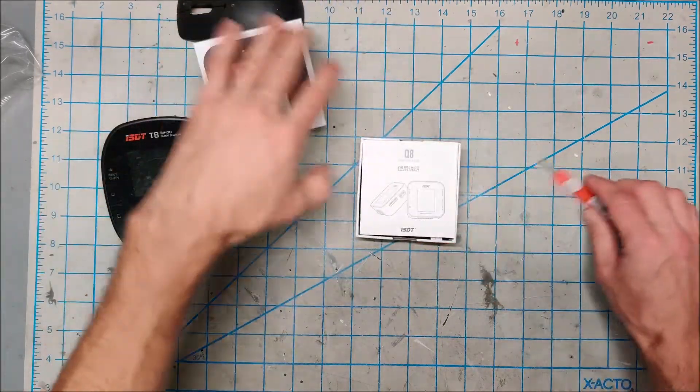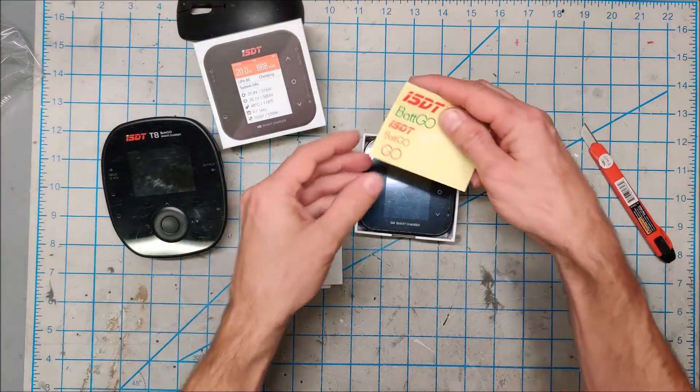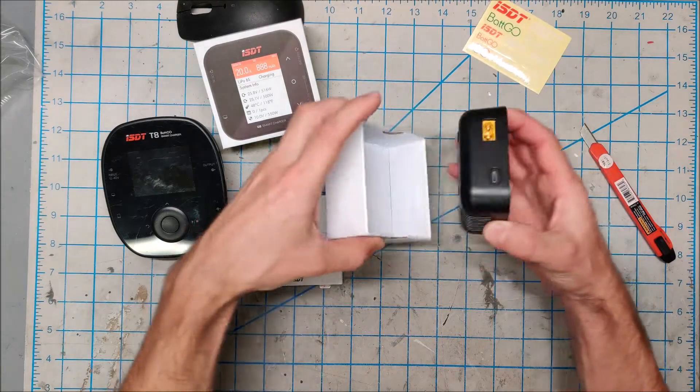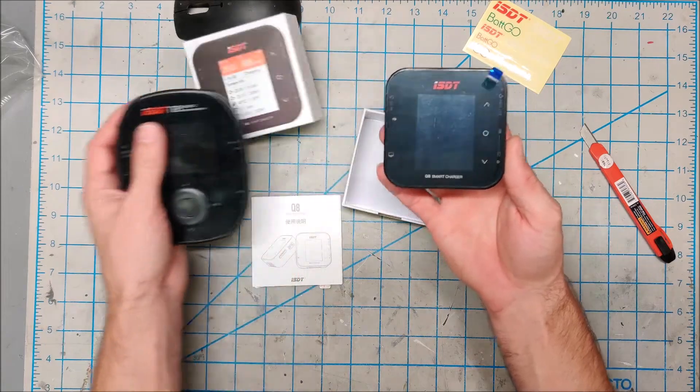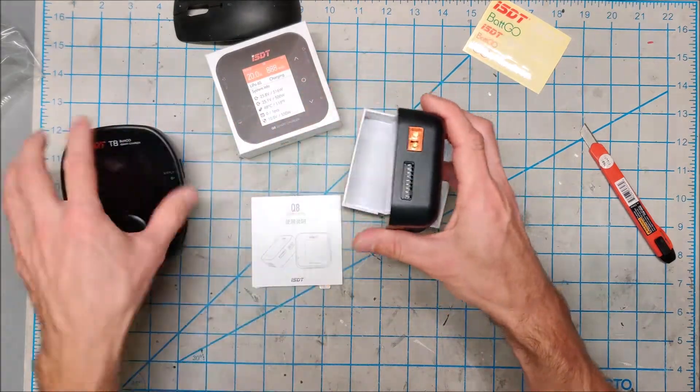Okay. Let's see here. Some stickers. Here it is. A lot smaller than the T8.